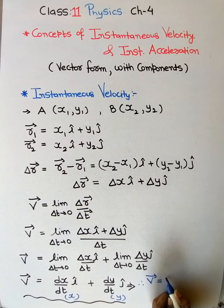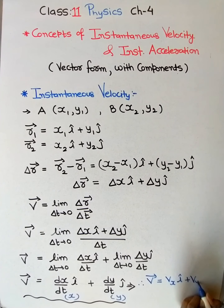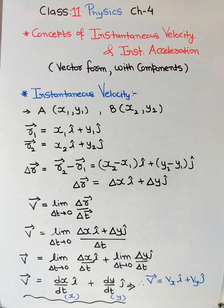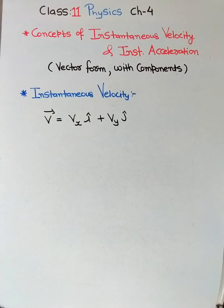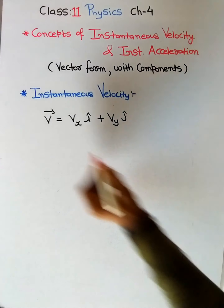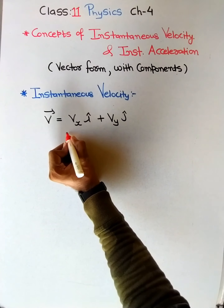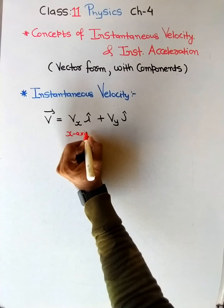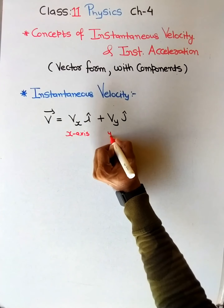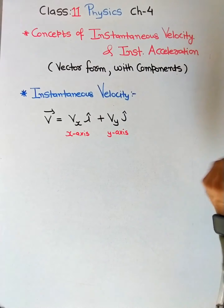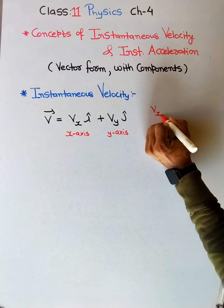So we can write in short: v = vx·i + vy·j. The instantaneous velocity is v = vx·i + vy·j, where the first term is along the x-axis and the second is along the y-axis.